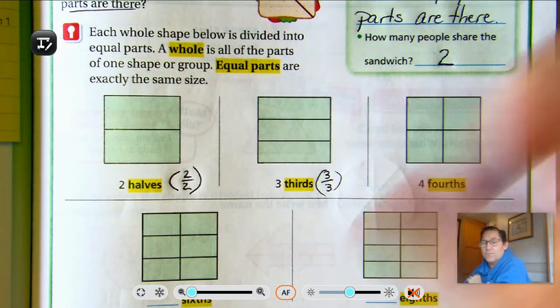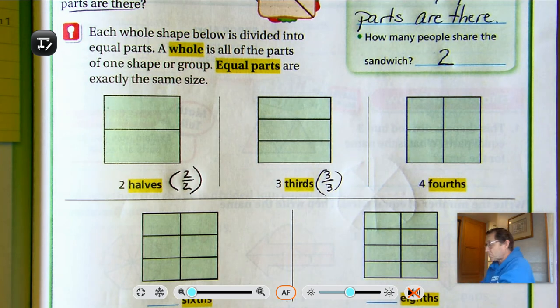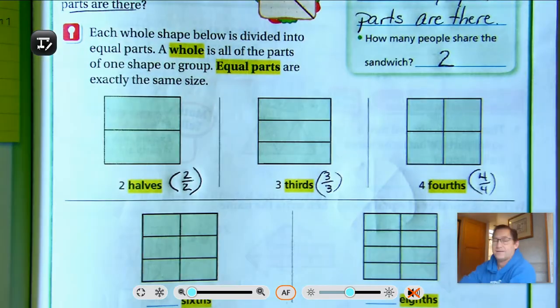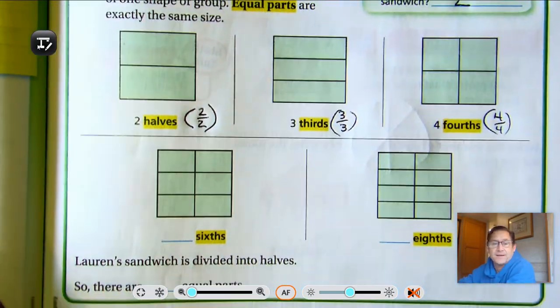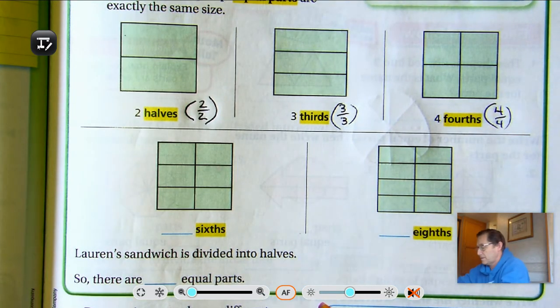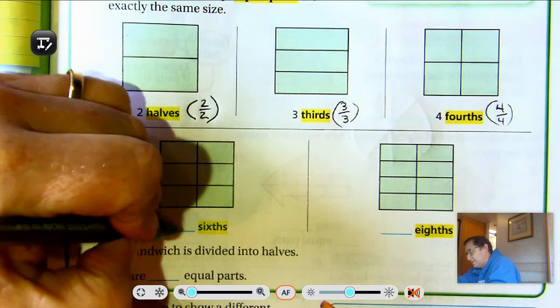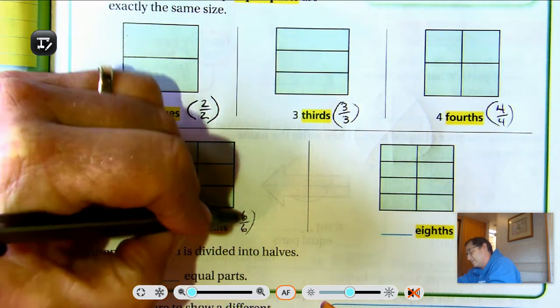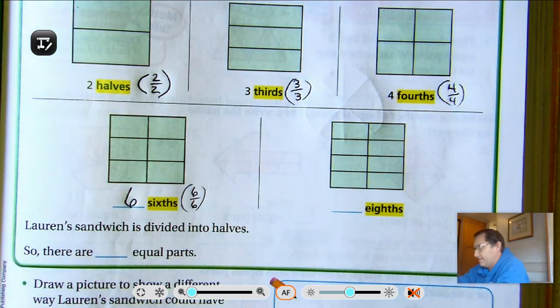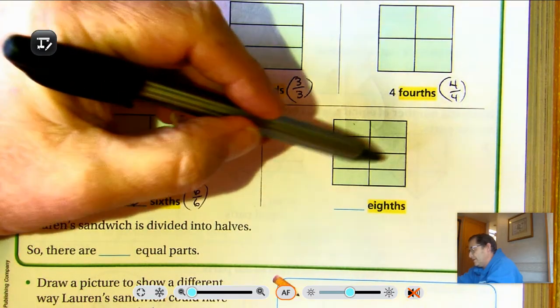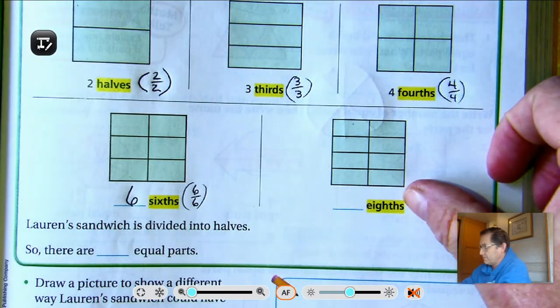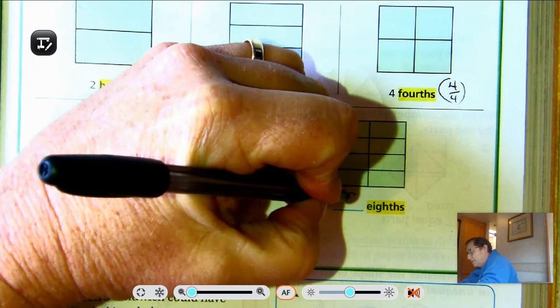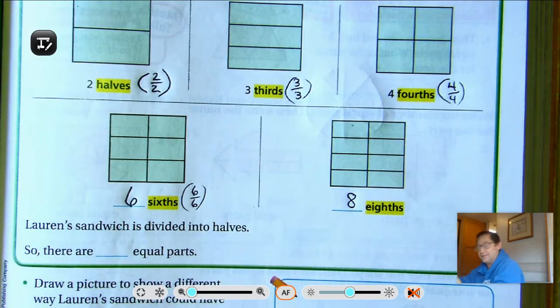This one is broken into four pieces, four equal parts. And we call that four fourths. And so as a fraction, it would look like that. Four out of four pieces. Sixths. One, two, three, four, five, six. So six sixths. And then this one has one, two, three, four, five, six, seven, eight equal parts. That's why it's called eighths. Because there's eight equal parts in the whole. So eight eighths is shown in that drawing.